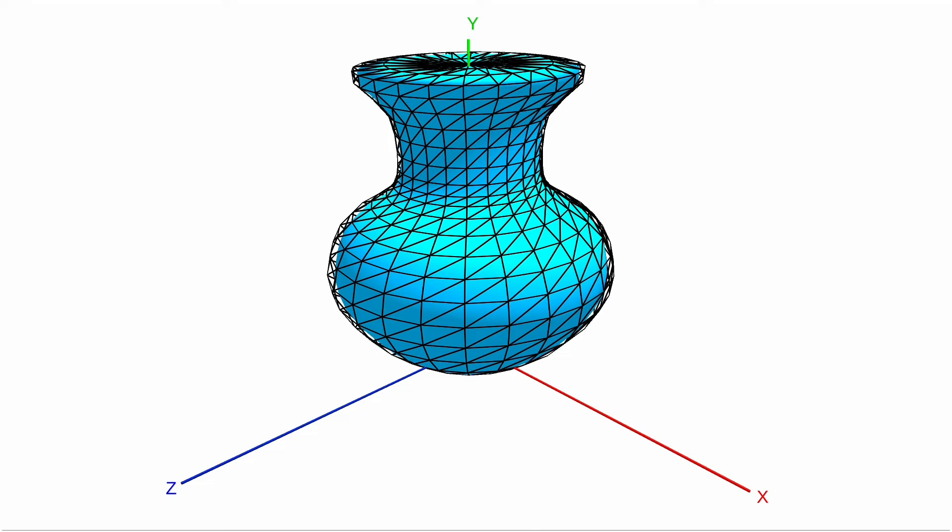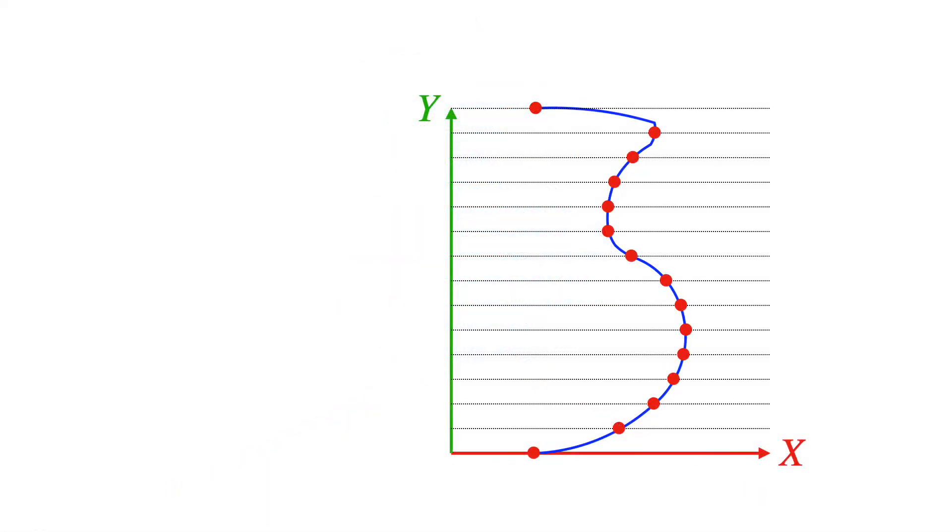Now one thing we haven't talked about yet is how to calculate the per-vertex normals, which we'll need to shade it like this. Let's go back to our curve and zoom into these three points. We can approximate the tangent at pj by the vector from the previous to the next point in the sequence. Let's scale it to a unit vector.